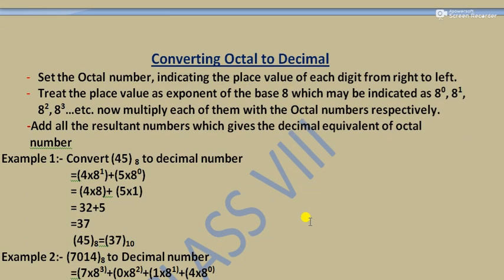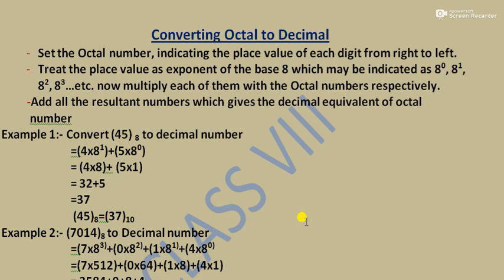Converting Octal to Decimal: Set the octal number indicating the place value of each digit from right to left. Treat the place value as an exponent of base 8 — that is, 8 power 0, 8 power 1, etc. Now multiply each digit by the corresponding power of 8, then add all the resultant numbers to get the decimal equivalent.